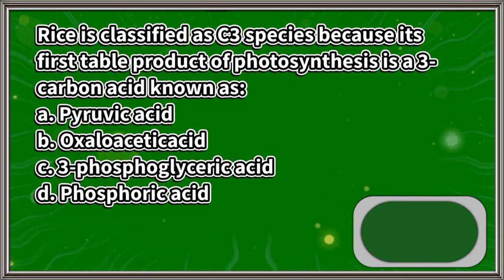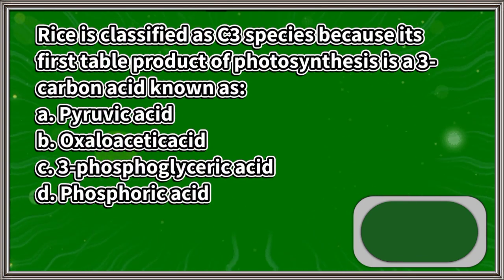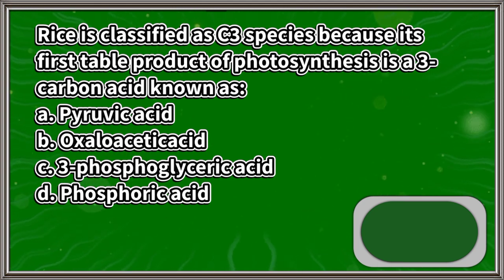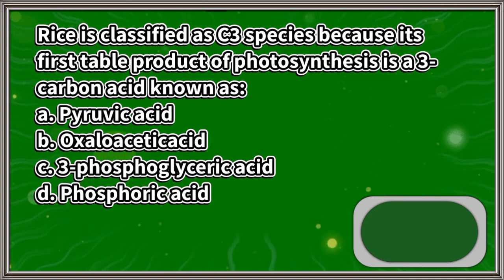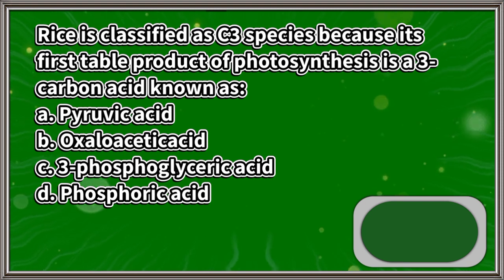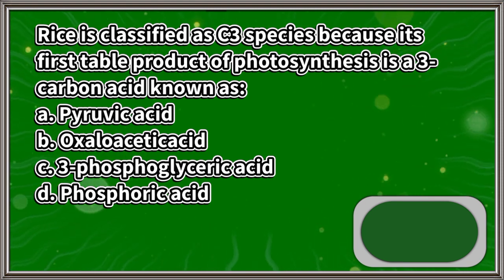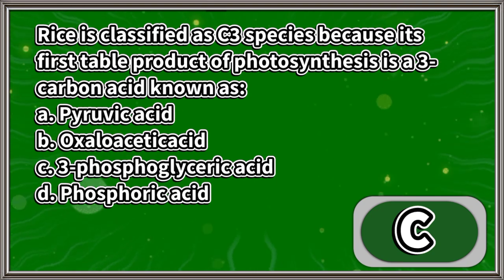Rice is classified as a C3 species because its first stable product of photosynthesis is a three-carbon acid known as: A. Pyruvic acid, B. Oxaloacetic acid, C. Three-phosphoglyceric acid, D. Phosphoric acid. The answer is letter C.